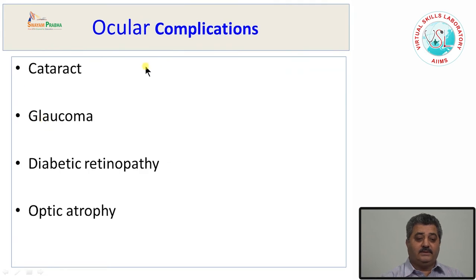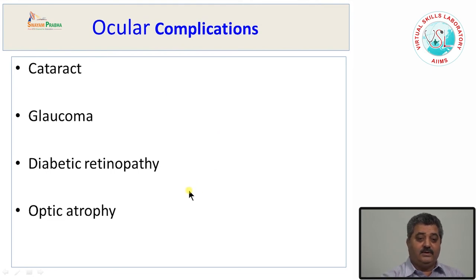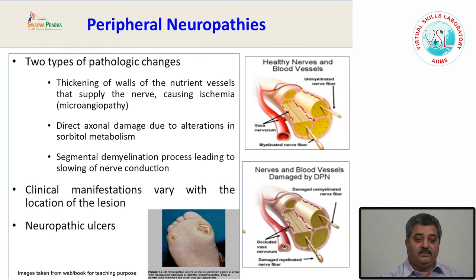The ocular complications are many: cataract is more common and develops at a younger age in diabetic patients compared to the normal population. They are also more prone to glaucoma, diabetic retinopathy, and optic atrophy. All these are complications of diabetic microangiopathy.